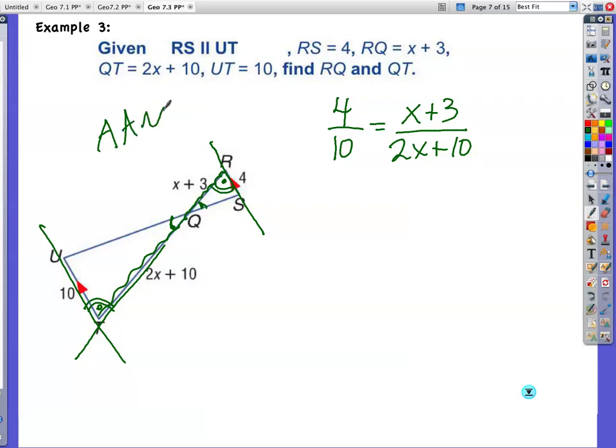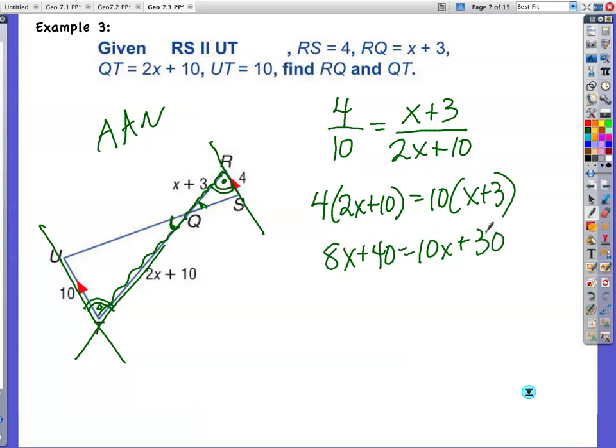All the sides are proportional, hence four to ten is the same as X plus three over two X plus ten. All right, now I will cross multiply. So I take four times two X plus ten is equal to ten times X plus three. I cross multiply, I get eight X plus forty. And now I have ten X plus thirty. And I do my fancy math, I subtract ten X from both sides. I'm going to subtract forty from both sides. I get negative ten. I divide both sides by negative two. And now I have X is equal to five.